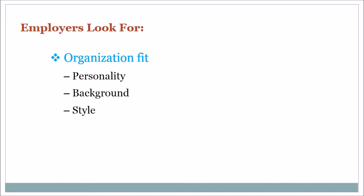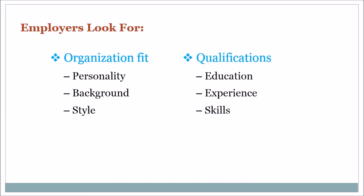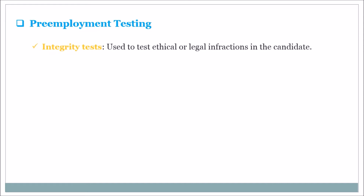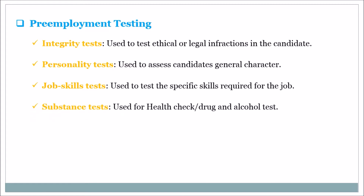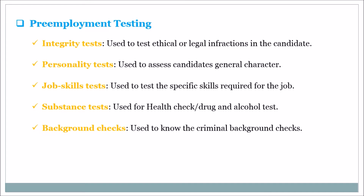Employers look for the following characteristics to find a perfect fit: personality, background, style, qualifications, education, experience, and skills. Pre-employment testing includes: integrity tests — used to test ethical or legal infractions; personality tests — to assess general character; job skills tests — to test specific skills required for the job; substance tests — for health checks including drug and alcohol testing; and background checks — to know the candidate's criminal background.